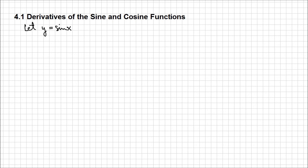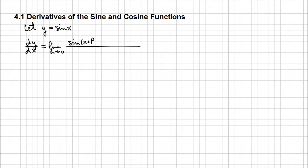What we need to determine is its derivative, dy/dx. As we know from the first chapter, we can calculate the derivative of every function using the first principal definition of the derivative. It was the limit when h approaches 0 of sine of x plus h minus sine of x, all over h.